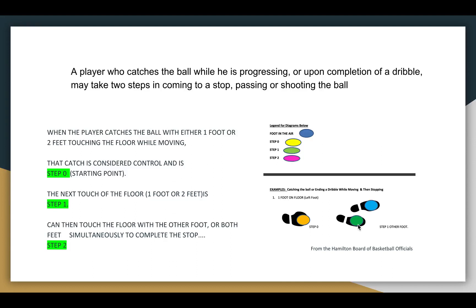The rule reads: a player who catches the ball while they are progressing, or upon completion of a dribble, may take two steps in coming to a stop, passing, or shooting the ball. Step zero is represented by the yellow marker. When the player first catches or gains control of the ball, this is considered to be step zero, or the starting point. The next touch of the floor with one or both feet is step one, and they can then touch the floor with the other foot or both feet simultaneously to complete the stop.